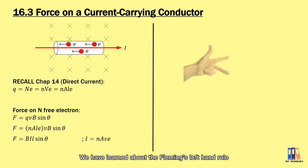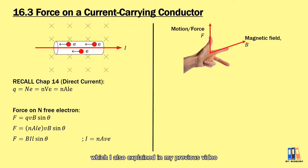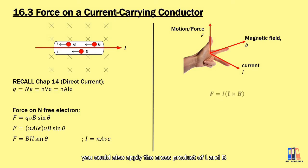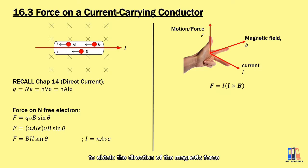We have learned about Fleming's left-hand rule, which I also explained in my previous video, except that the second finger now represents the flow of current. Besides that, we can also apply the cross product of L and B to obtain the direction of the magnetic force.